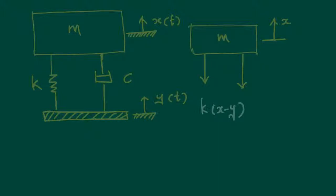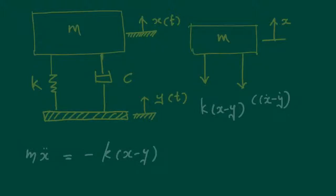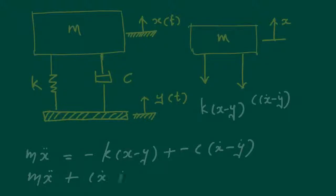The damper force is c(ẋ − ẏ). Summing all forces acting on the system: mẍ = −k(x − y) − c(ẋ − ẏ), which rearranges to mẍ + cẋ + kx = ky + cẏ. The right-hand side is the forcing function.